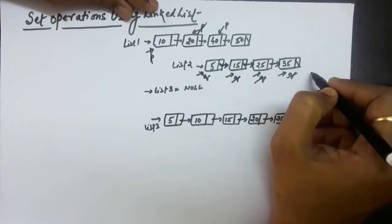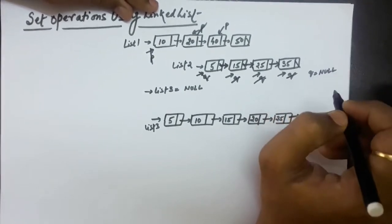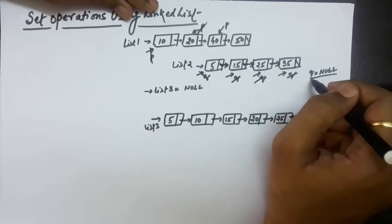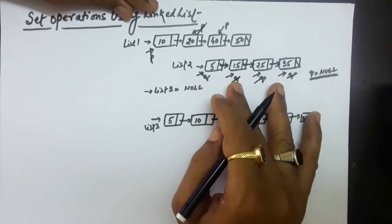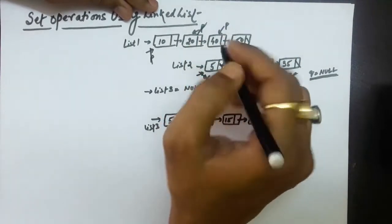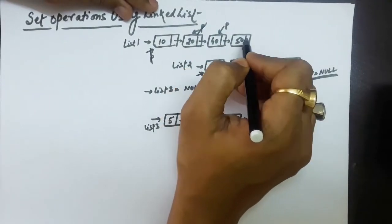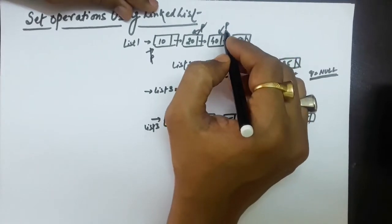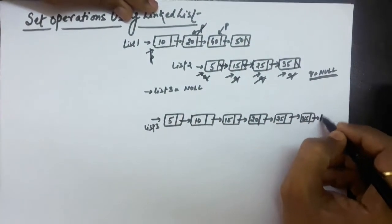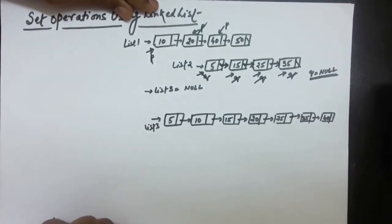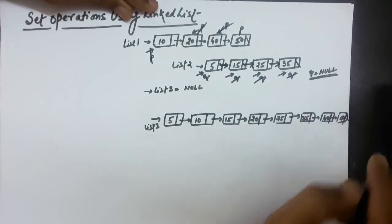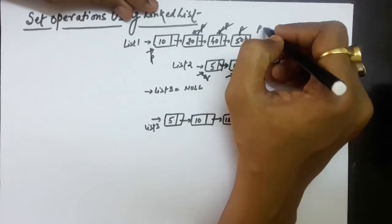After adding 35, as soon as we increment q to go to the next node, q becomes null because the next field of this node is null. This means the second linked list has no more nodes. But the first linked list may still have remaining nodes — here 40 and 50 are left. So we take those nodes one by one and add them to the final linked list. 40 is inserted, then 50 is inserted, and p also becomes null.